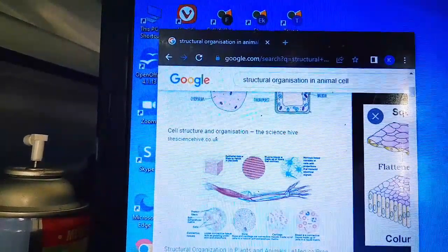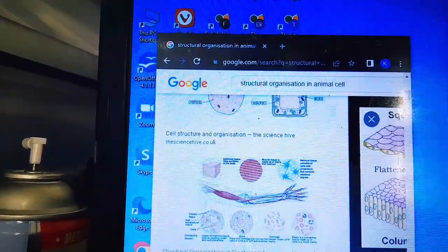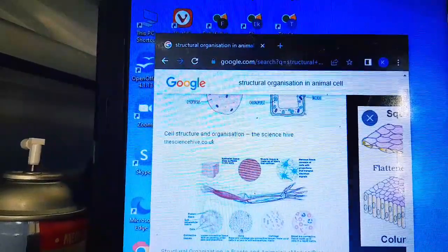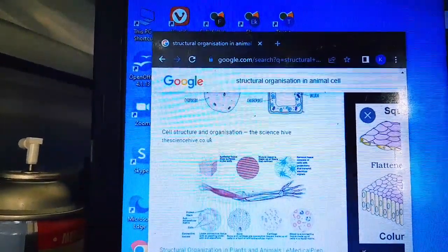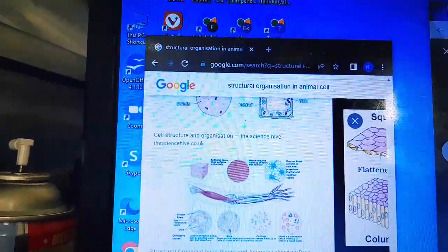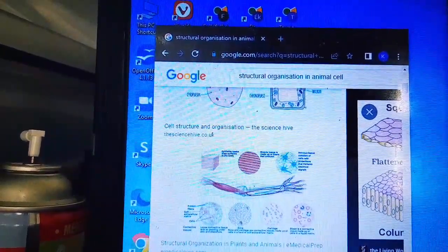Both these different types of cells have basic differences in structure and organs. The animal cells are classified into different types based on their functions, structures, and other factors. Epithelial tissue is one such animal tissue.